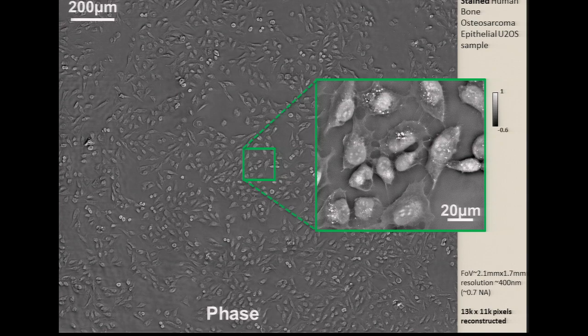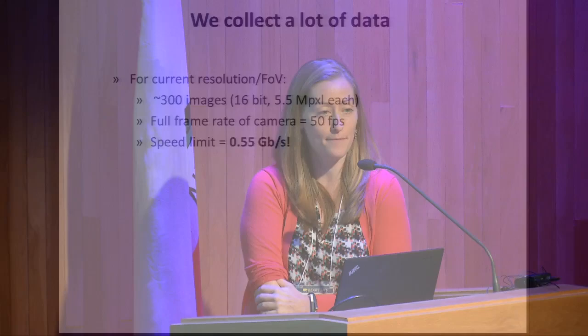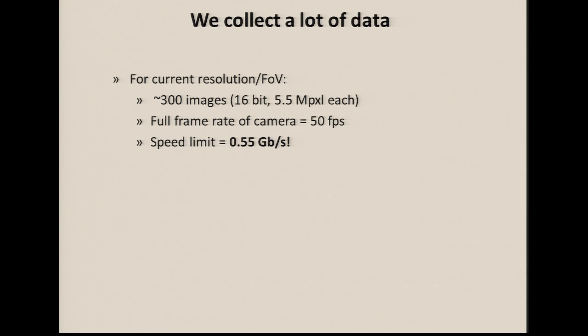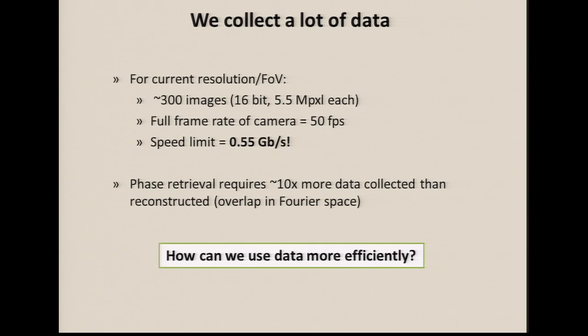This is big data: we're capturing 5.5 megapixels at 50 frames per second and need about 300 images to get our final result. This is basically our speed limit — about half a gigapixel per second, so the best we can hope for is a gigapixel image every two seconds. Or is it? The phase retrieval algorithm is actually taking 10 times more data than it needs, because these algorithms need some redundancy to converge. Can we use our data more efficiently so that we collect a gigapixel of data and reconstruct a gigapixel of data?